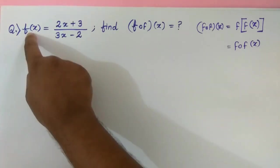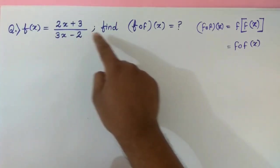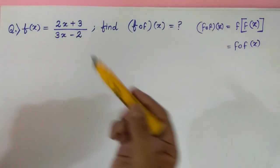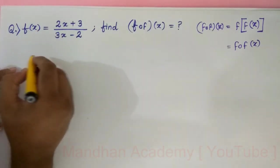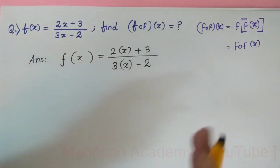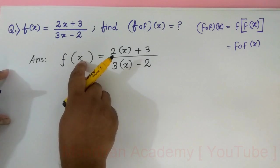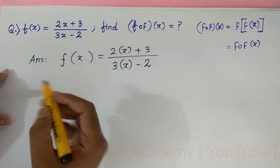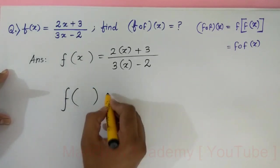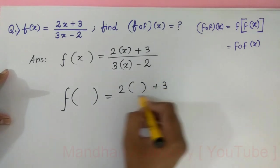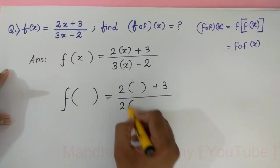The question is f of x equal to something, find f of f of x. This means you just write the function as it is. What I am going to do is in every place of x I am going to substitute f of x.